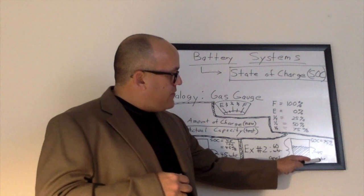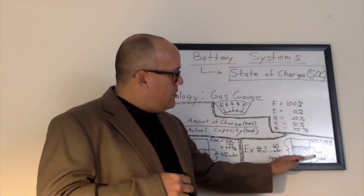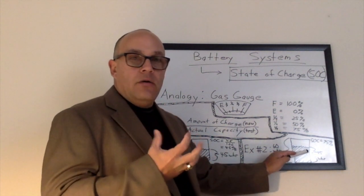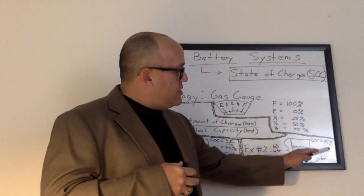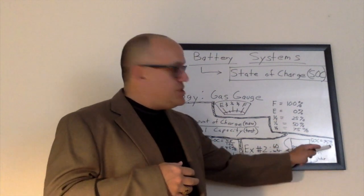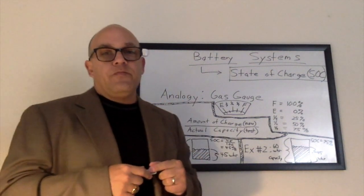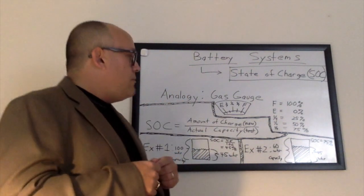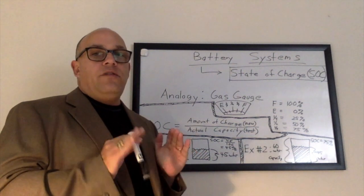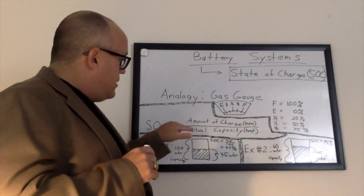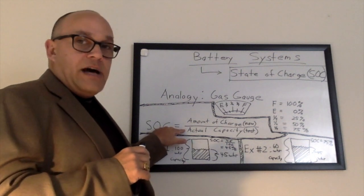That I can deliver to the load. Well, the state of charge is 45 divided by 60, which is 75 percent state of charge. Straightforward numbers. As you can tell, the concept is relatively simple with the exception of actual capacity in the bottom of the equation.